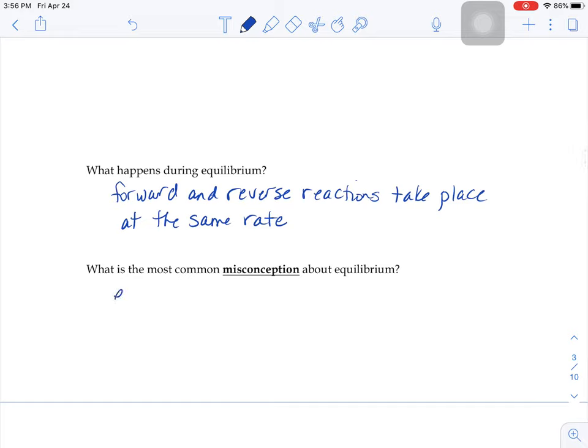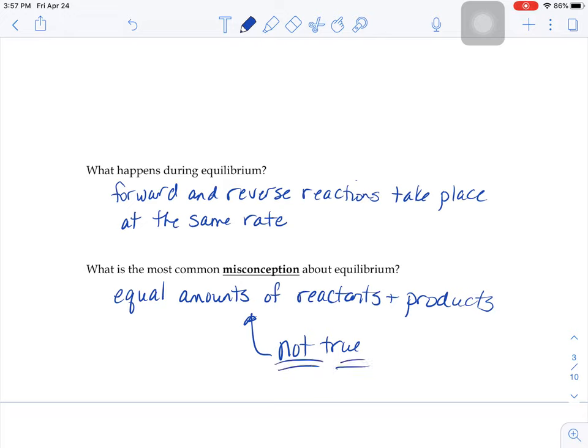And the biggest misconception, the thing that's wrong, is a lot of people think that you need to have equal amounts of reactants and products at equilibrium. And this is not true. This is a misconception. It's the rates going back and forth that have to be the same for it to be considered an equilibrium reaction.